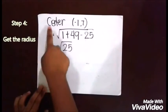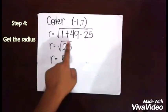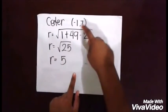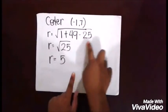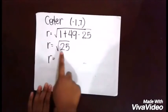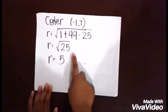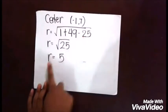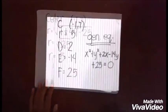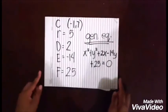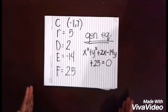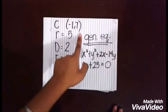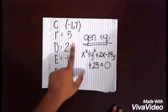To obtain the radius, use the formula: r = √((d/2)² + (e/2)² - f) = √(1 + 49 - 25) = √25, so r = 5. The center is (-1, 7) and the radius is 5.